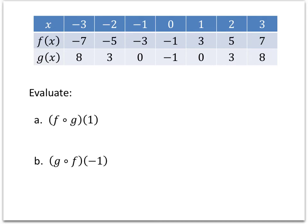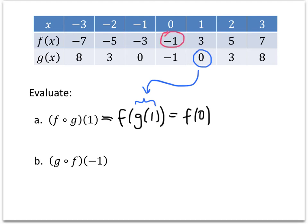Remember that what that means is f of g of 1. And once we realize that, now all we have to do is start looking things up in our table. What's g of 1? Well, g of 1 is 0. And so this is really just f of 0. And f of 0 is negative 1. That's it.